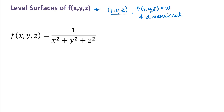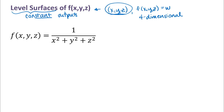What we can do with a function like this is, instead of looking at a graph of the whole function w = f(x, y, z), we can basically look at slices of the function. So those would be level surfaces — graphs of x, y, z where we have a constant output. We'll find all of the x, y, z that give us those specific constant outputs.